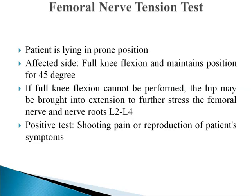The femoral nerve tension test: the patient is lying in a prone position. On the affected side, the knee is maintained in full flexion at approximately 45 degrees. If full knee flexion cannot be performed, the hip can be brought into extension to further stress the femoral nerve and nerve roots of L2 to L4.